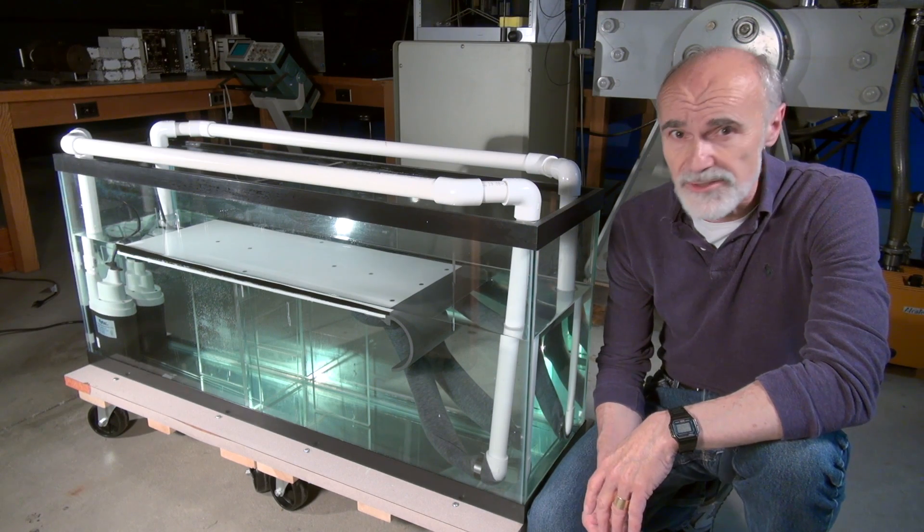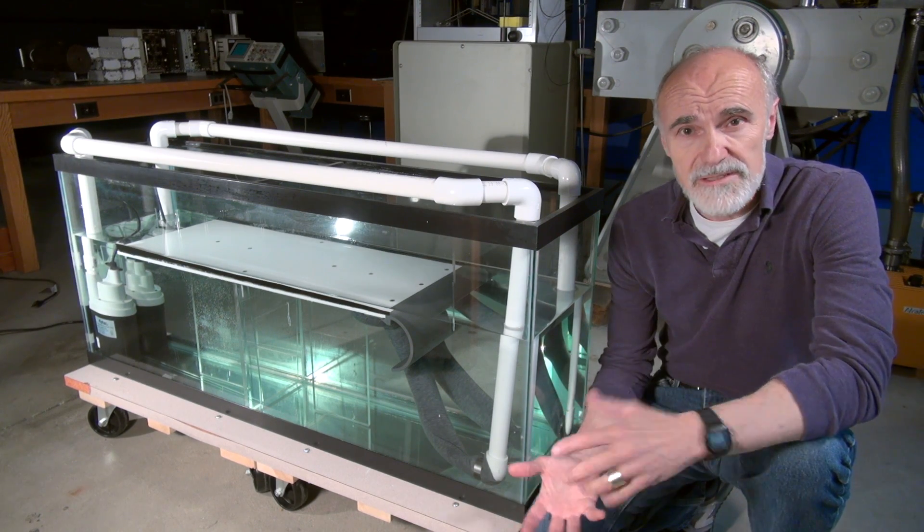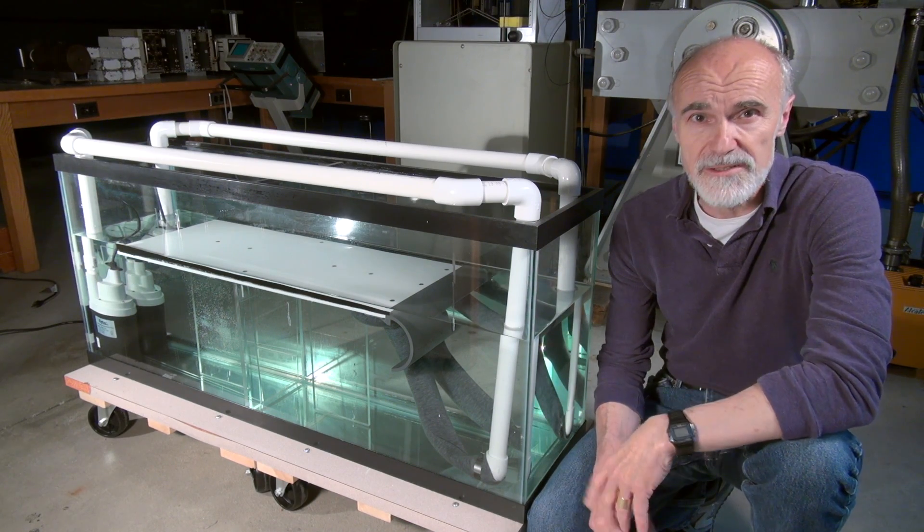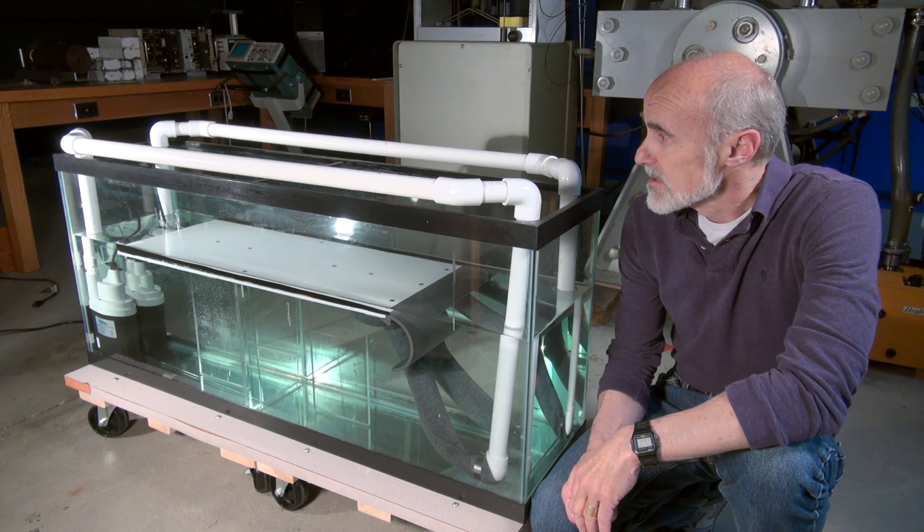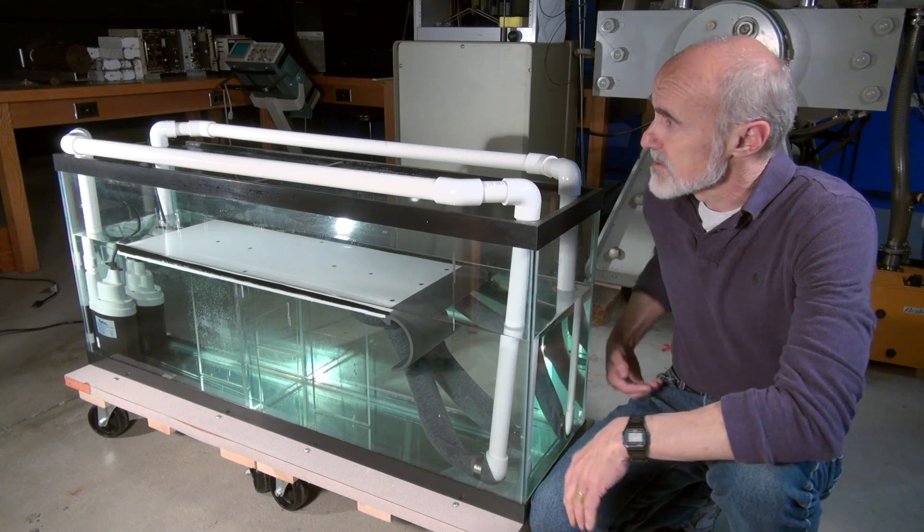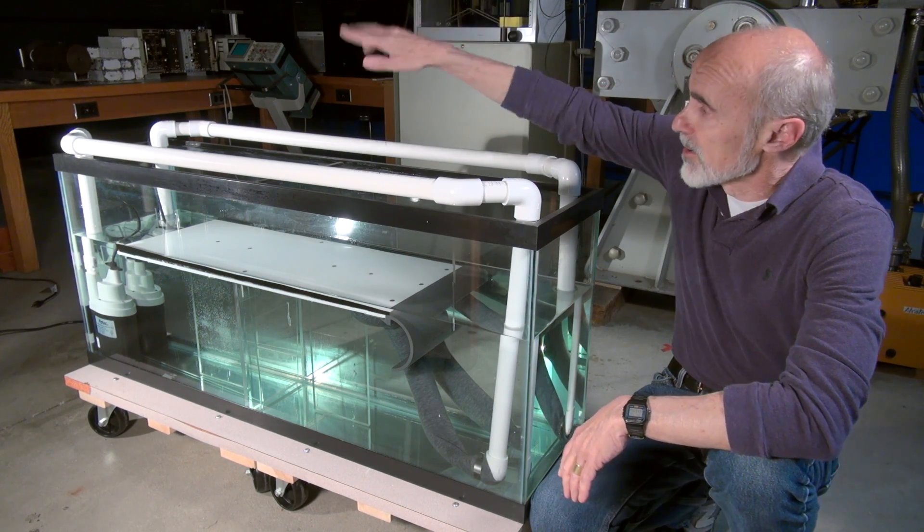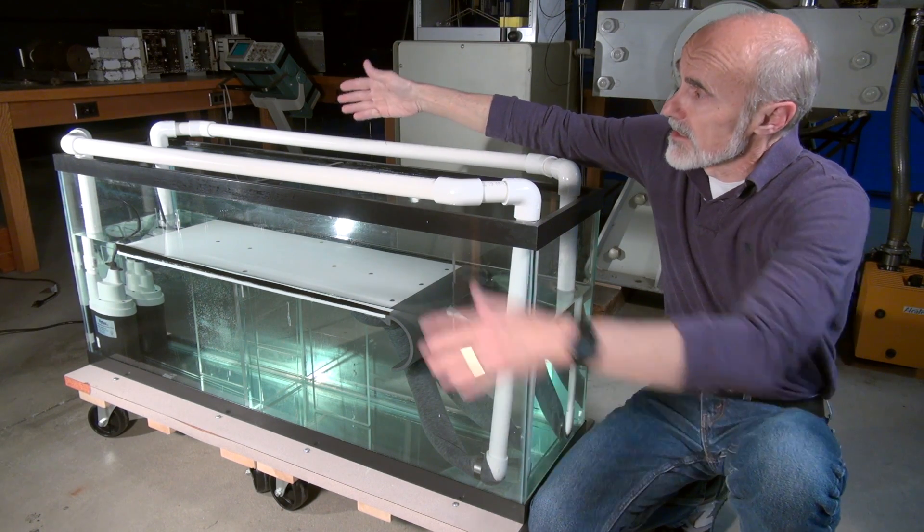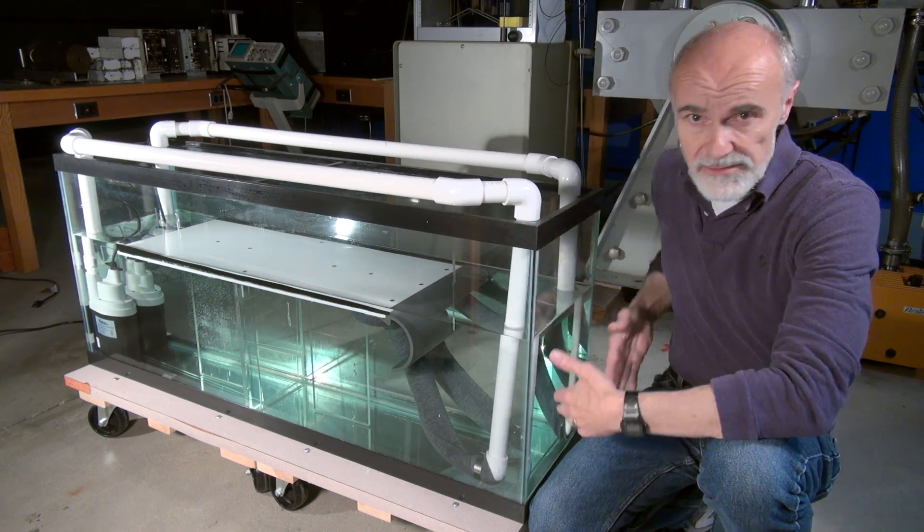So the object is going to be a pendulum, and the fluid is water, and that's why we've got this big aquarium which we've converted into a flow tank. There's a barrier in the middle of the aquarium that separates one end from the other. At the far end, we've got a couple of pumps that pump the water from that end through these pipes down to this end.